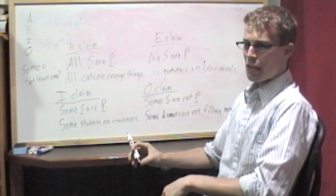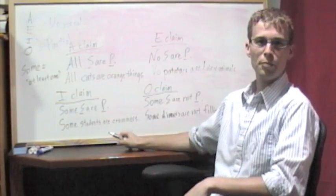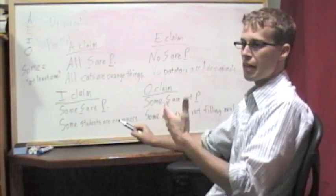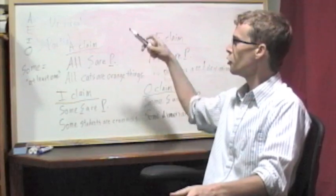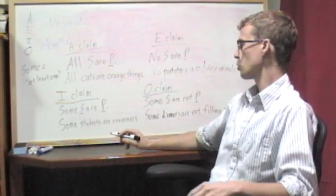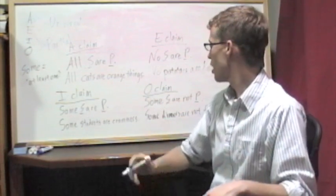So, keep in mind that with any partial claim like, some students are crammers, that doesn't automatically make a claim that in everyday life. It doesn't make the universal claim true. The corresponding universal claim. Or, it doesn't make it false. It doesn't make it true or false.